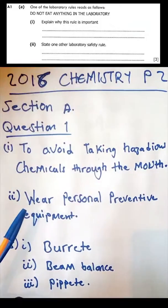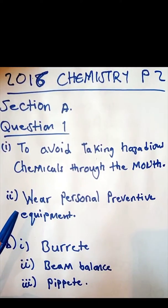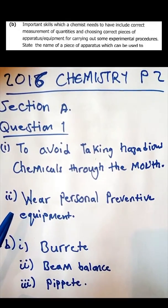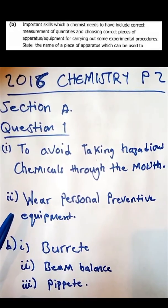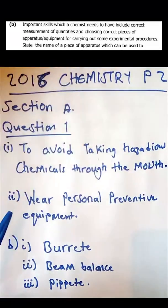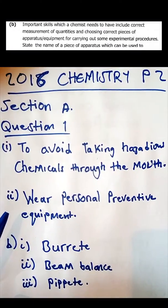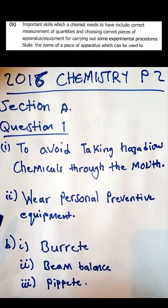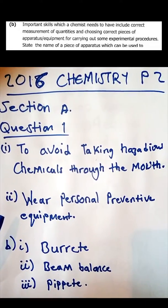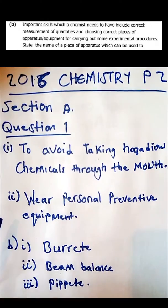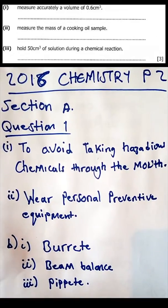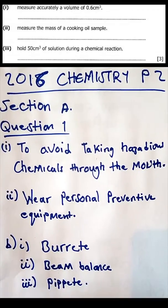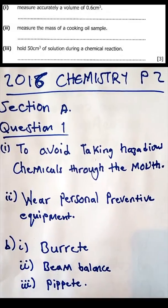Question 1b reads: important skills which a chemistry student needs to have include correct measurement of quantities and choosing correct pieces of apparatus for carrying out experimental procedures. State the name of the piece of apparatus which can be used to measure accurate volume of 0.6 cubic centimeters.